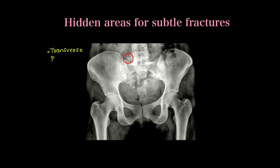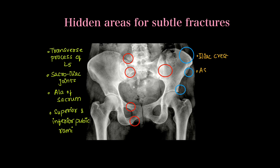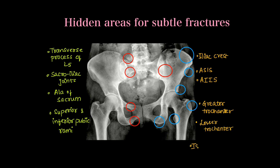Lastly, we will see some hidden areas on AP x-ray of the hip where subtle fractures can be missed. These include the transverse processes of L5, bilateral sacroiliac joints, the ala of the sacrum, the superior and inferior pubic rami as sites for stress fractures, the iliac crest, the anterior superior iliac spine, the greater trochanter as another stress fracture site, the lesser trochanter where fractures can be missed, and the ischial tuberosity.